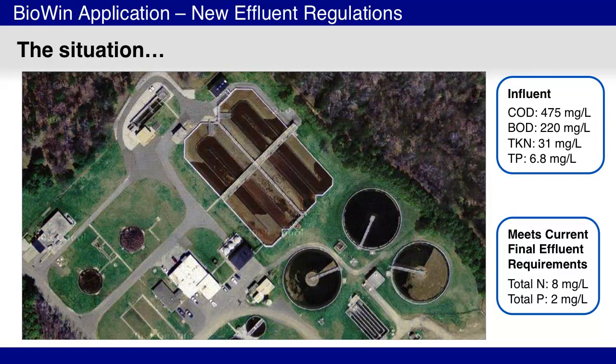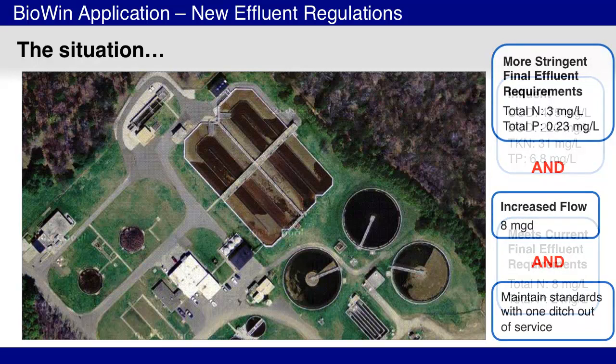The plant was meeting its effluent requirements, which included phosphorus and total nitrogen limits. There were several goals for this project, which included investigating if the plant could meet more stringent effluent requirements, if the plant could meet these new effluent requirements at an increased flow, and if the plant could do all of this if one of the two ditches was taken out of service for maintenance.